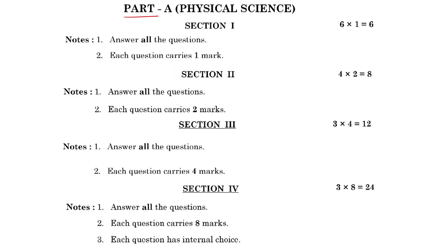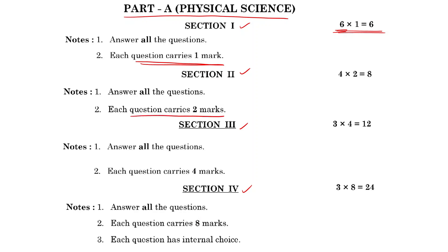Part A is the physical science paper with four sections. Section 1 has 1-mark questions — there are 7 questions worth 1 mark each, giving 7 marks total. Section 2 has 2-mark questions with four questions; you must answer all four to score 8 marks.